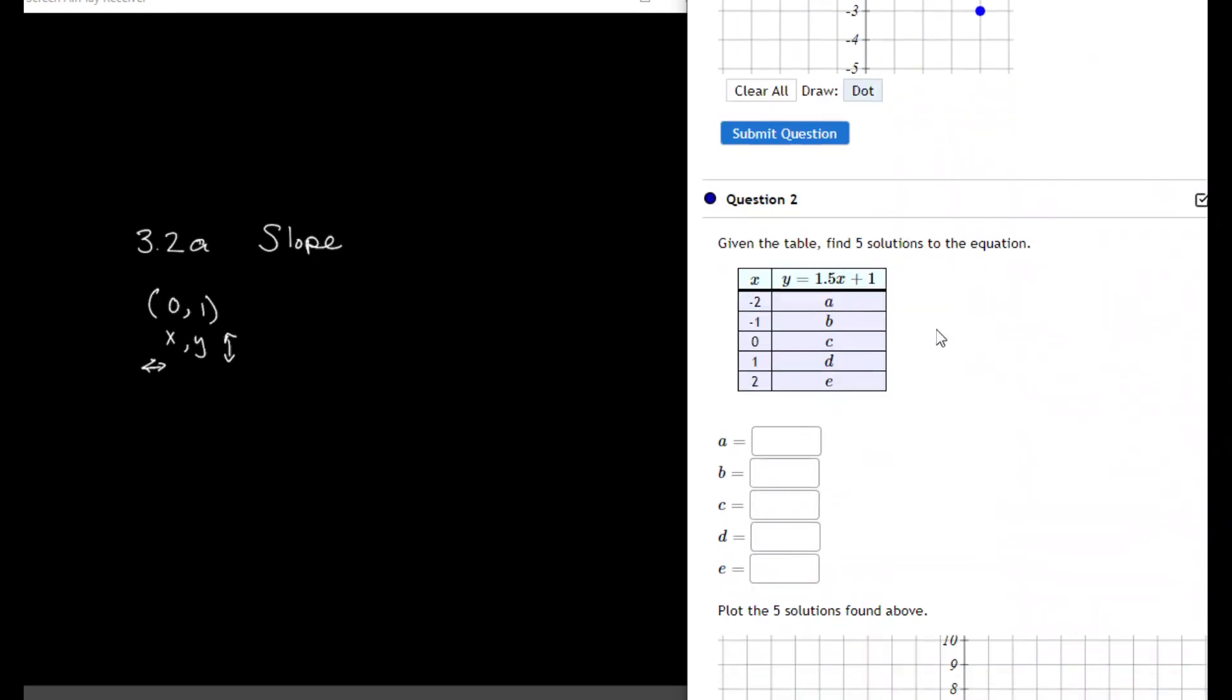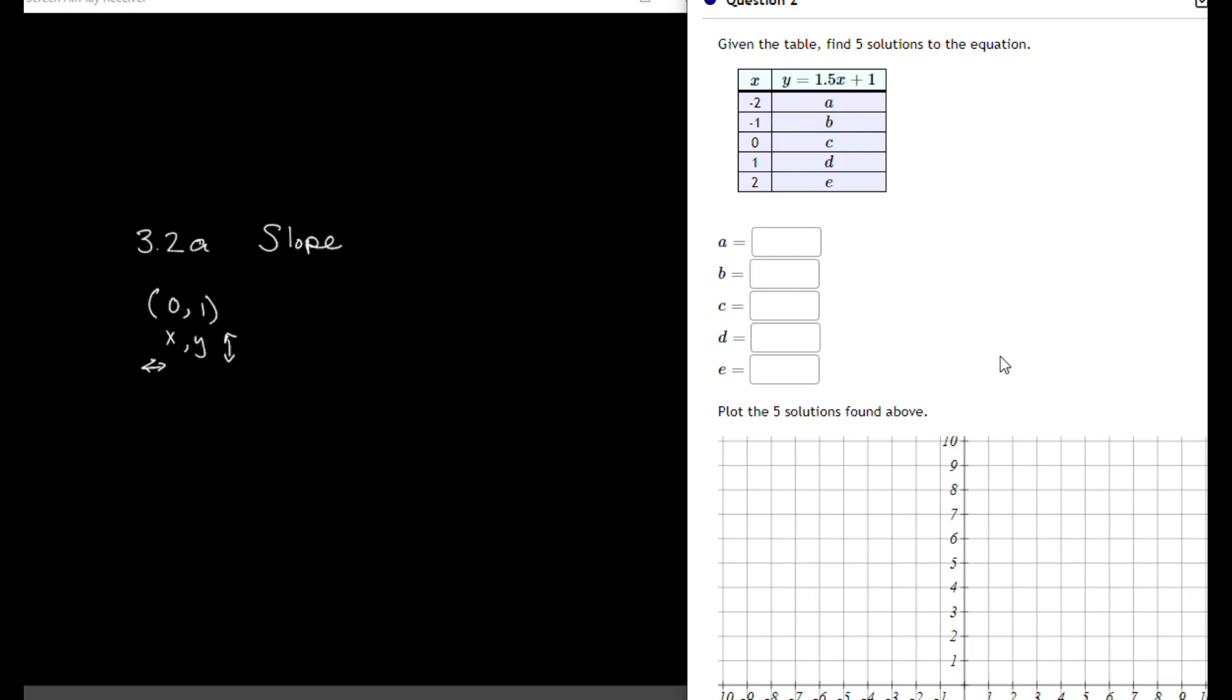All right, so question 2 has a little bit more pieces to it. What we're going through and doing is we're given the equation y equals 1.5x plus 1. They're asking us to create a table of values for x and for y. First plug in x equals negative 2, then negative 1, then 0, then 1 and 2.